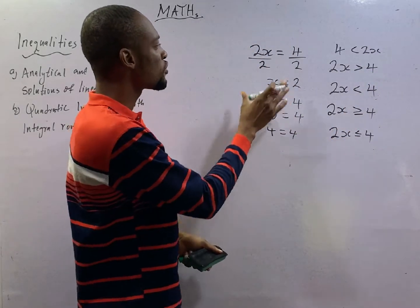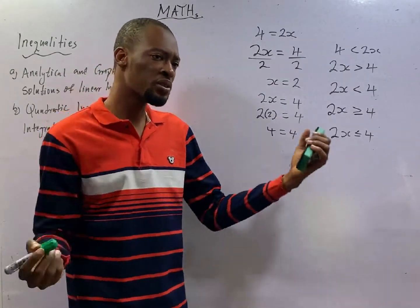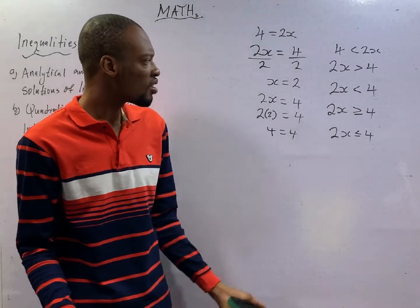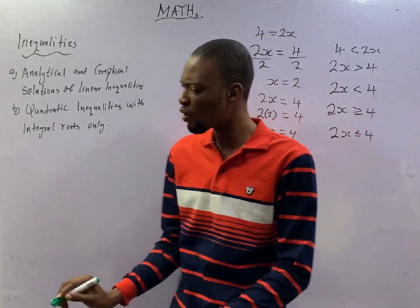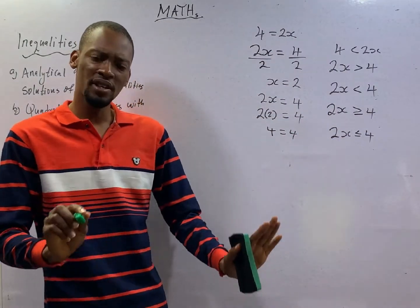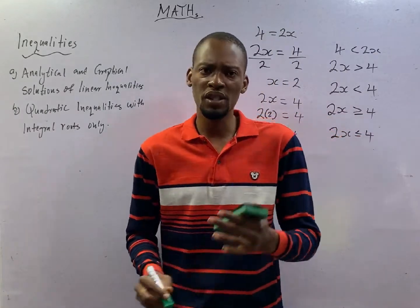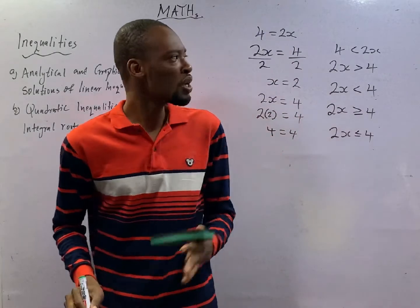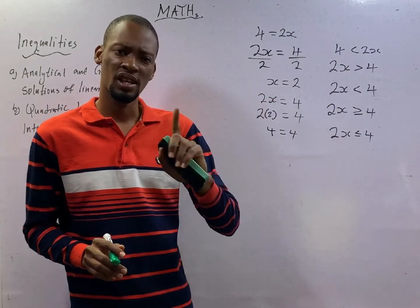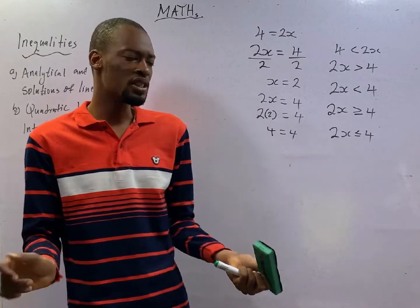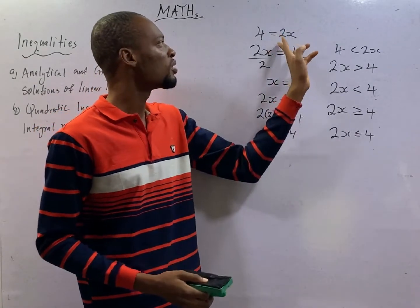Unlike equations, where if 2s equals 4 it also means 4 equals 2s, when you reverse the order of operations in inequality, the sign must change. Also, when you divide or multiply both sides by a negative number, the sign will change. The change of sign is one of the key differences between equations and inequalities. The second difference is that reversing the order of arrangement also changes the symbol, whereas for equations it does not.